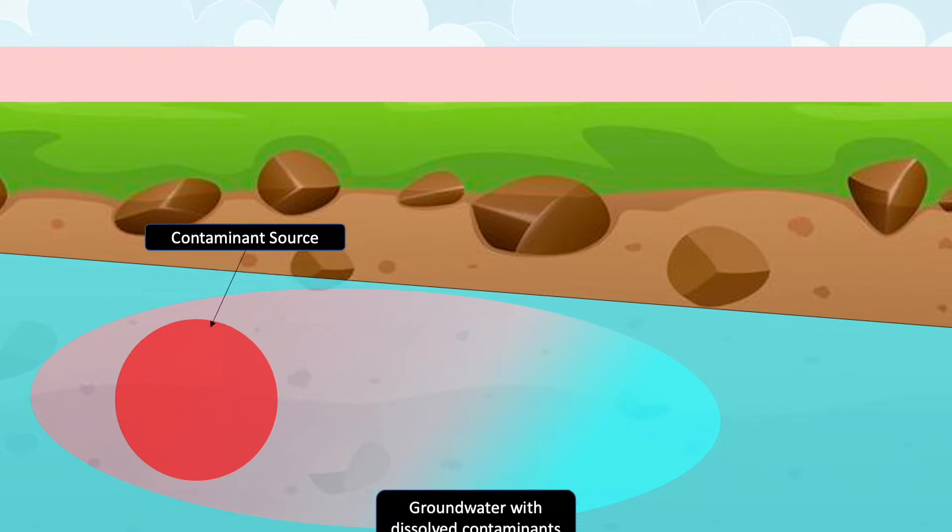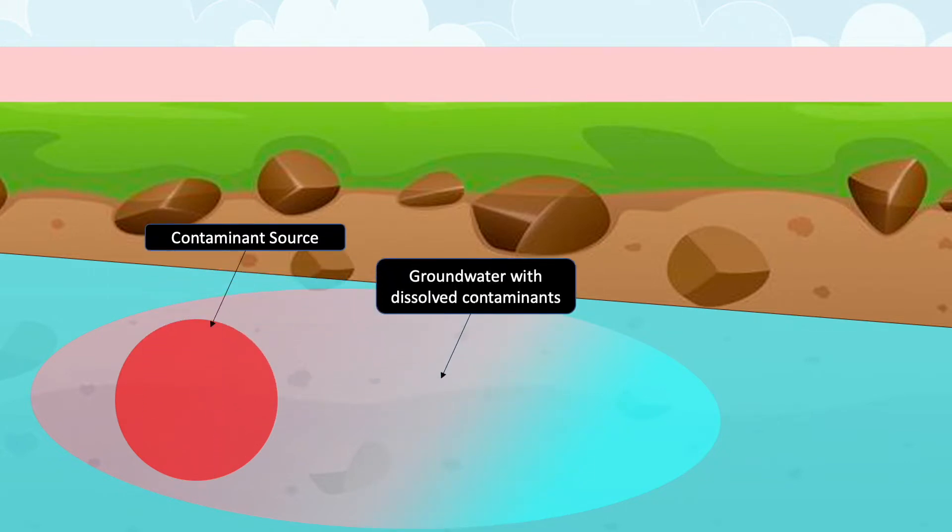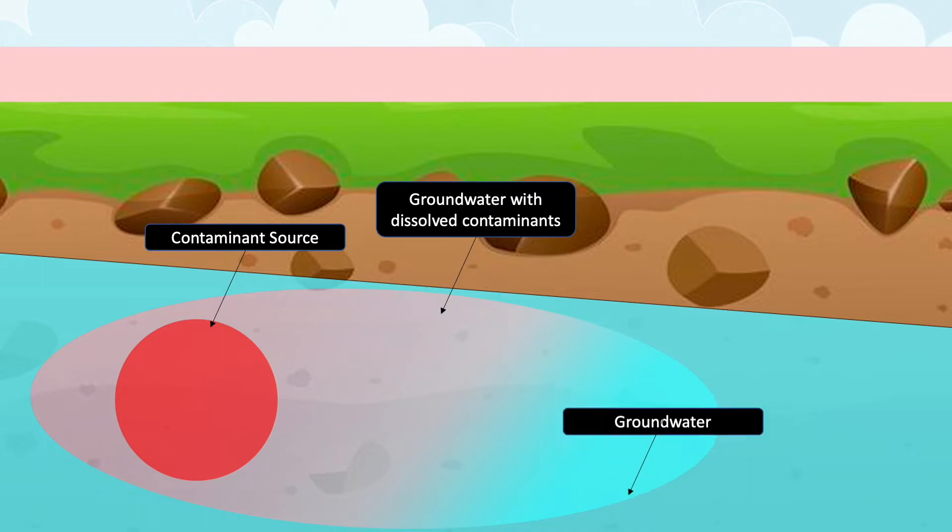Pump and treat is a common method for cleaning up groundwater contaminated with dissolved chemicals, including industrial solvents, metals, and fuel oil.